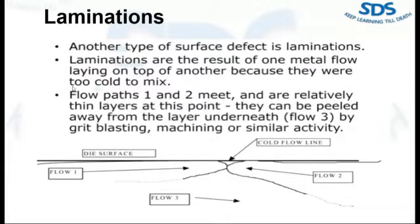This is the only reason for this kind of defect - the metal was too cold to knit together when the flows met. Laminations are a problem because when the casting is processed by machining or grit blasting, the metal flow layers peel away, creating casting defects.